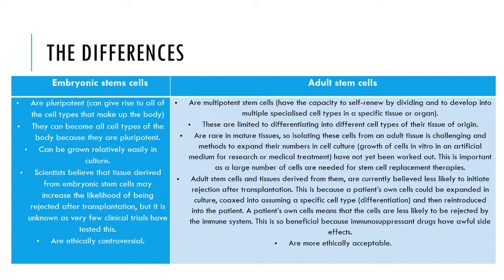Adult stem cells are also rare in mature tissues, so isolating these cells from an adult tissue is challenging. Methods to expand the numbers in cell culture — that is, growth of cells in vitro in an artificial medium for research or medical treatment — have not yet been fully worked out. This is important as a large number of cells are needed for stem cell replacement therapies.